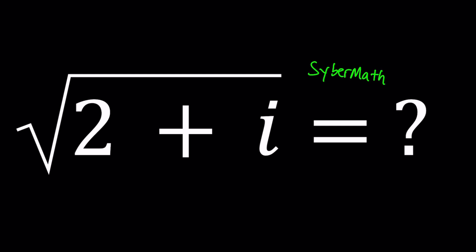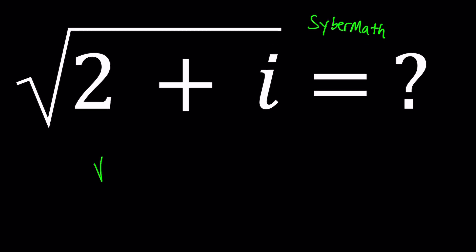So how do you find the square root of 2 plus i? Now if we were given the square root of 2i, that would be easy because you could say 1 plus i. How do we know that? Because when you square 1 plus i, you get 2i. You can check it out.